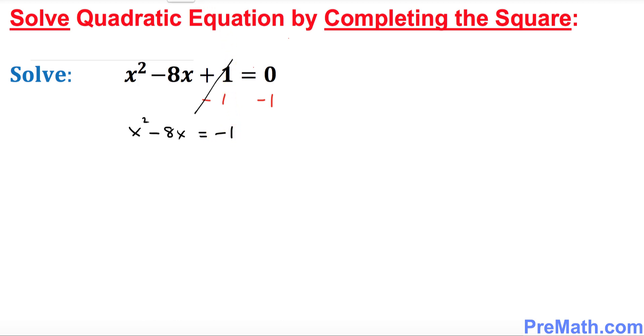The next step is look at the coefficient of x which is 8. Don't worry about the negative sign, just focus on 8. Put 8 somewhere here. Now divide this number 8 by 2. Once you divide this we're going to get 4. And the last step is square this number 4, so 4 power 2.